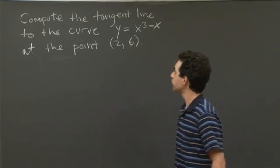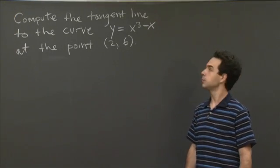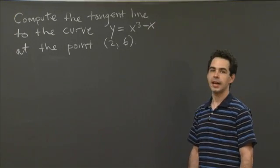Here I have a question on the board. Compute the tangent line to the curve y = x³ - x at the point (2, 6).